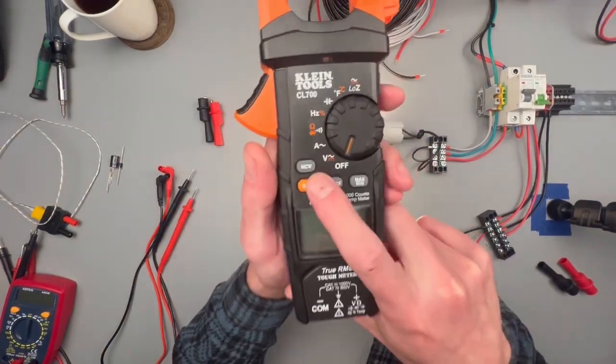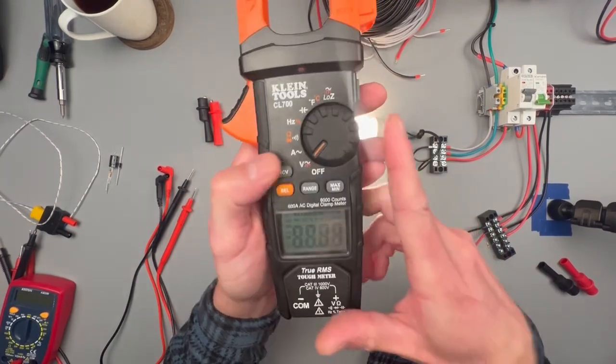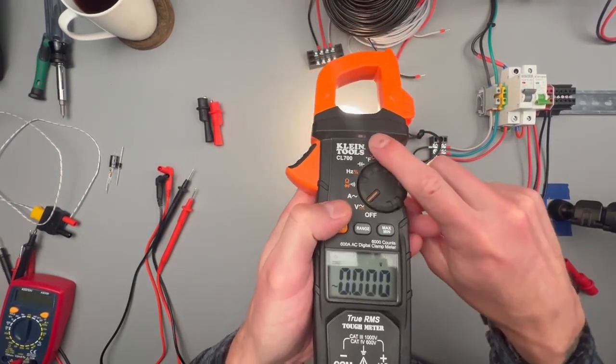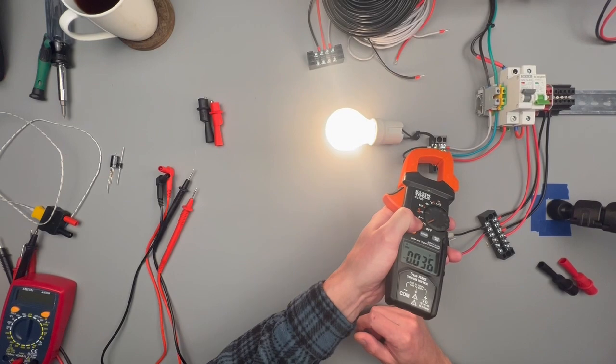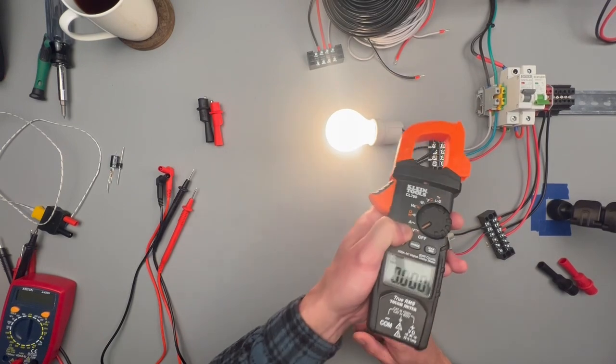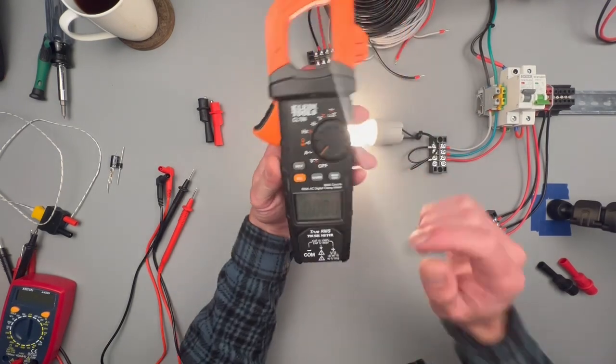It has a non-contact voltage setting, so it's going to give you a visual indicator, a little red light, and when you come towards a live circuit, it's going to go ahead and light up for you. I thought that was a great feature.